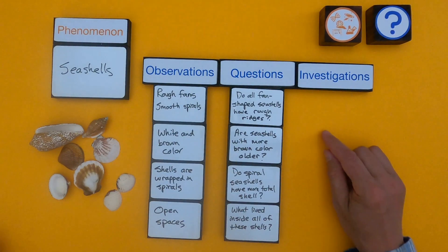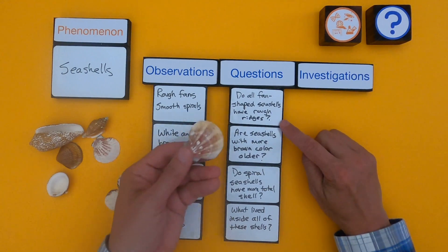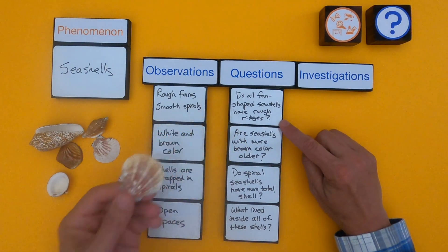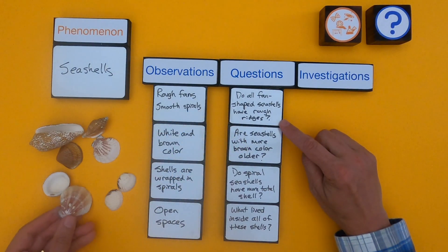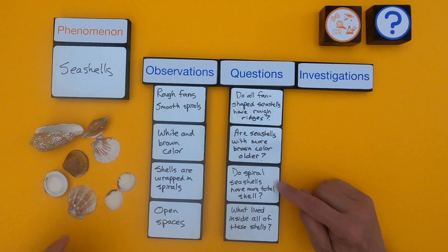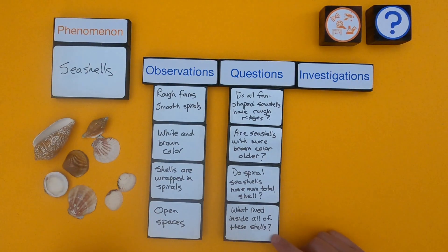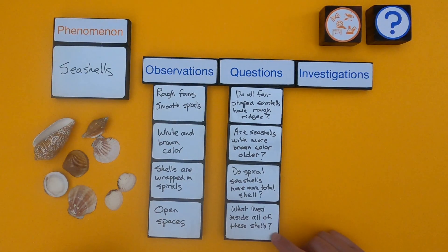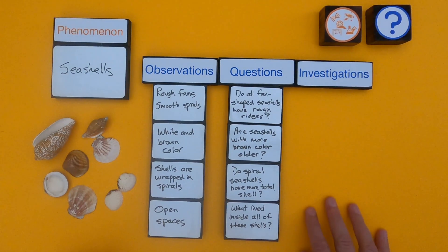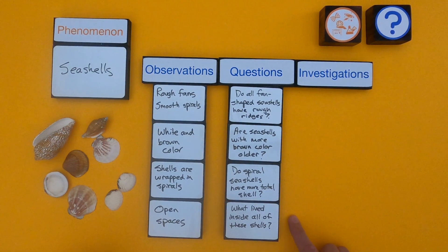Using those observations to turn them into questions: do all fan-shaped seashells have rough ridges? Are the seashells that are more brown older? Do spiral seashells have more total shell than fan seashells? And what lived inside all of these shells? The next thing I want to do is figure out which of these observational questions I could investigate and answer right now.